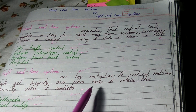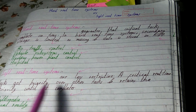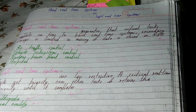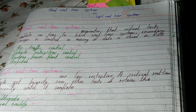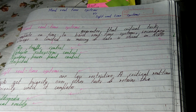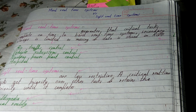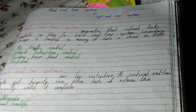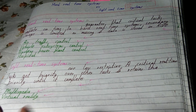In soft real-time systems, a critical real-time task gets priority over other tasks and retains that priority until it completes. High-priority tasks are given a chance first, and lower-priority tasks come later. For example, a starred mail will be sent instantly compared to a normal mail. In real life, speed post reaches in one or two days while normal post takes five to six days.